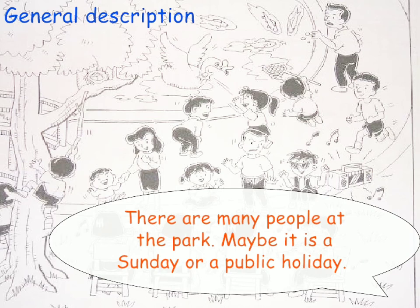Then you describe the general description. If there are some objects, people, or things in the picture, you need to describe them generally. For example: 'There are many people at the park. Maybe it is a Sunday or a public holiday, so that is why you can see so many people over there.' Similarly, if any picture is given to you, you describe it — for example, there are many children, or there are birds or animals at the zoo.